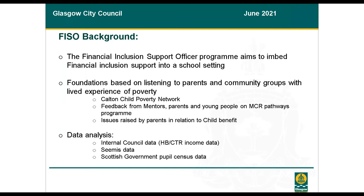Data from our mainstream financial inclusion services told us that 60% of clients using those services did not have children, and data from clients making applications to the Scottish Welfare Fund showed 67% did not have children. This confirmed that families with children were not accessing financial inclusion assistance as much as they should be. Early work with colleagues at the Centre for Civic Innovation led us to compare real income data from the housing benefit and council tax reduction system with education benefits data in the SEEMIS system to chart uptake of educational benefits across all schools in the city.